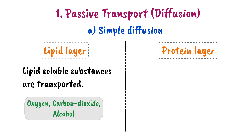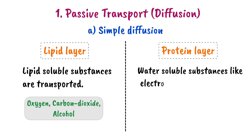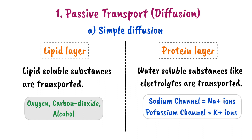The second type is Simple Diffusion through the Protein Layer. Water-soluble substances and electrolytes are transported this way. There is a protein layer in the cell membrane, and these molecules pass through it. These channels are specific to electrolytes — for example, the sodium channel allows sodium ions to pass, and similarly potassium ion channels are permeable to potassium ions.